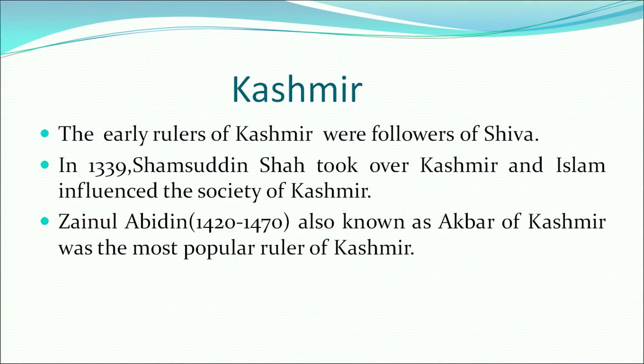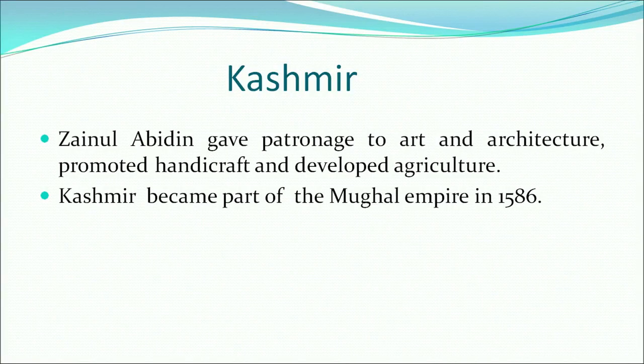The next regional state is Kashmir. The early rulers of Kashmir were followers of Shiva, but in 1339, Shamsuddin Shah took over Kashmir and Islam began to influence the society. Slowly, most of the poor people in Kashmir embraced Islam, which became an integral part of the region. Zainul Abidin was known as the Akbar of Kashmir because he tried his best to bring back the Hindus who had fled Kashmir. During his rule, art and craft flourished — he sent artisans to Samarkand, and the craft of papier-mâché became popular in Kashmir. He also promoted agriculture, and the Mughal Empire finally took over Kashmir in 1586.